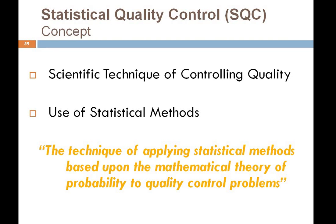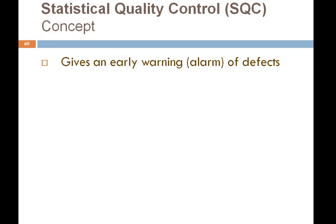When we are using this mathematical theory of probability and applying those statistical methods to control those deviations, we are implementing Statistical Quality Control. It is an important tool simply because it gives an early warning — it works like an alarm.